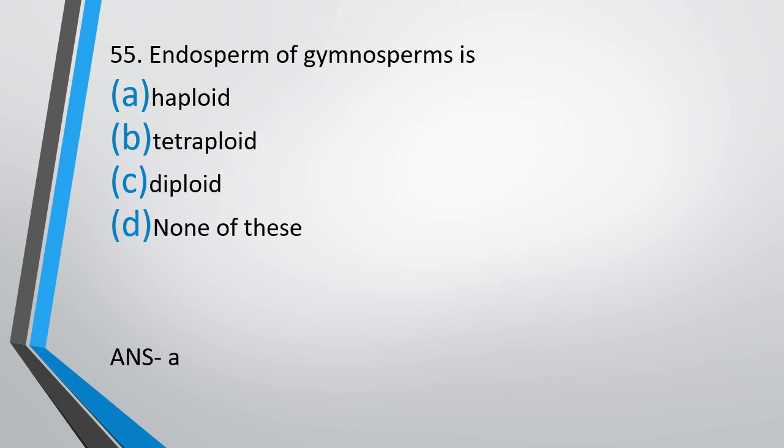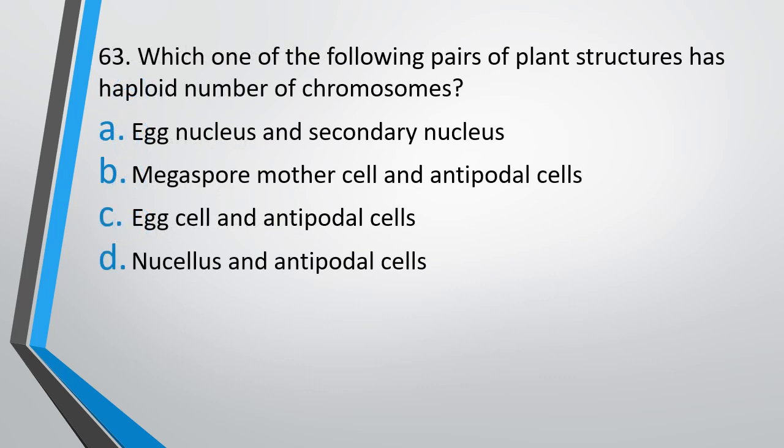Question number 63. Which one of the following pairs of plant structures has haploid number of chromosomes? Egg nucleus and secondary nucleus, megaspore mother cell and antipodal cells, or egg cells and antipodal cells. Correct answer is option C — egg cell and antipodal cells.